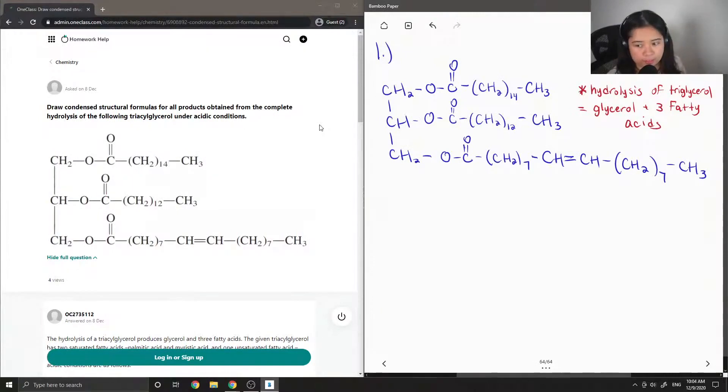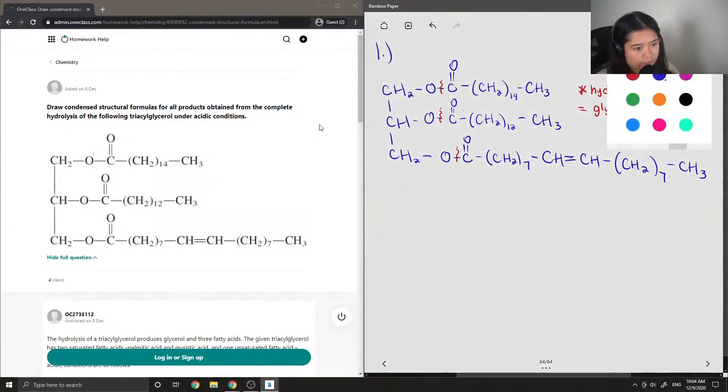So we can look at this structure by breaking the bonds kind of at each carboxylic acid group just so we can visualize the type of products that we will get. So during this hydrolysis reaction, three water molecules will react.